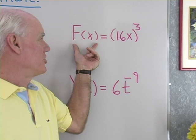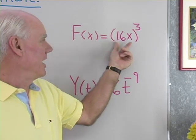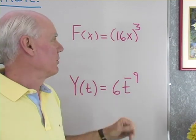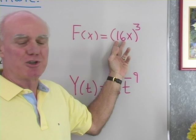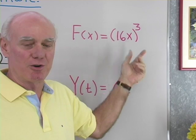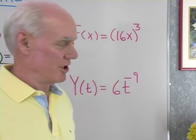Alright, I want to differentiate F with respect to x, and F(x) is equal to (16x) to the third. A couple different ways to do this. You could simplify this first and make it 16 to the third times x to the third, if you wanted to separate those, or you could just use the chain rule. Let's just differentiate.